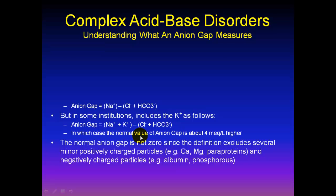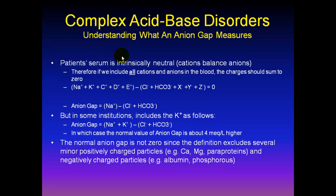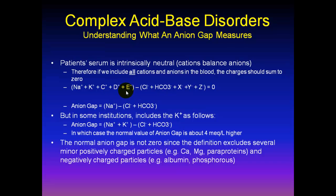Let's talk about complex acid-base disorders. Before we get into the details, it would be very helpful to understand exactly what an anion gap measures. We all have to agree that a patient's serum is intrinsically neutral — that is, the cations must balance the anions. Therefore, if we were to include all cations and anions in the blood, all of these charges should sum to zero. So: sodium plus potassium plus other positively charged ions — let's call them C, D, and E — would represent all of the positives in your blood.